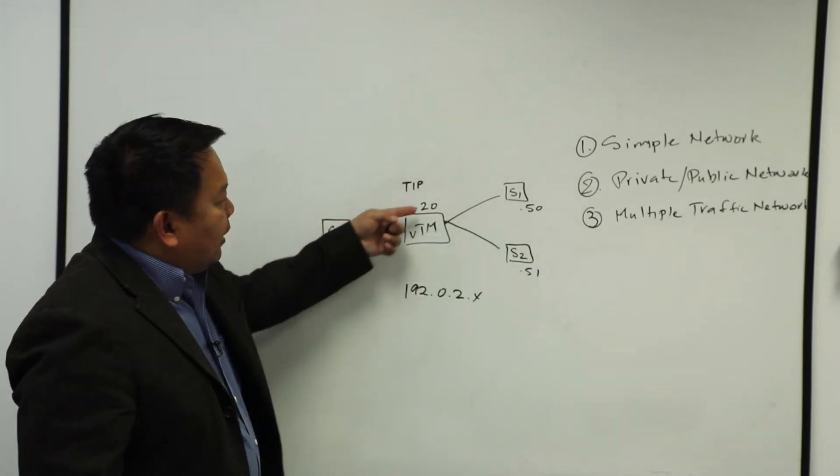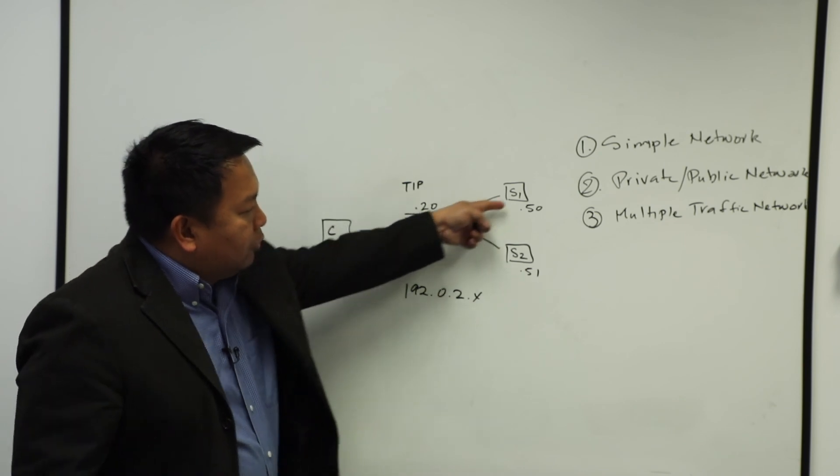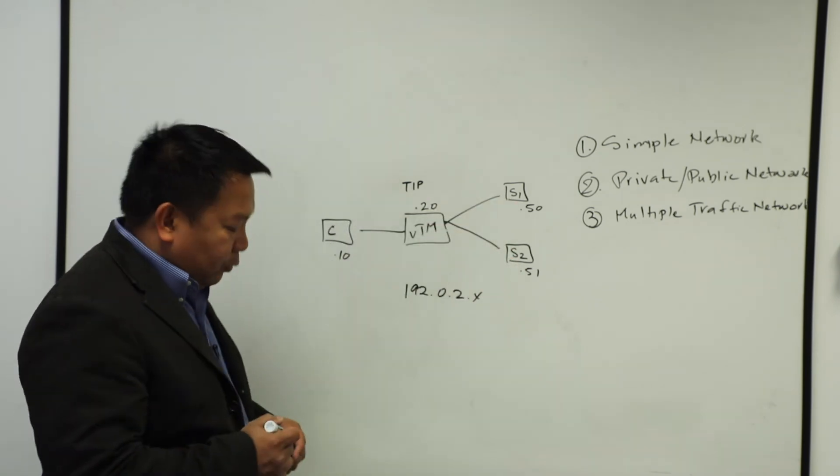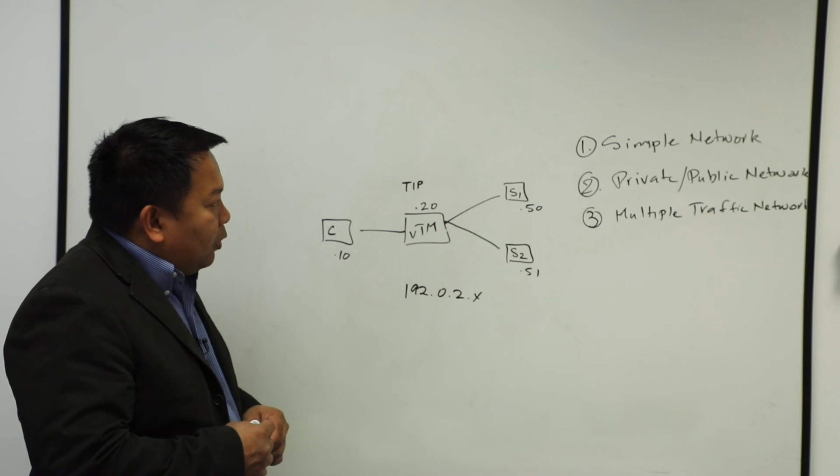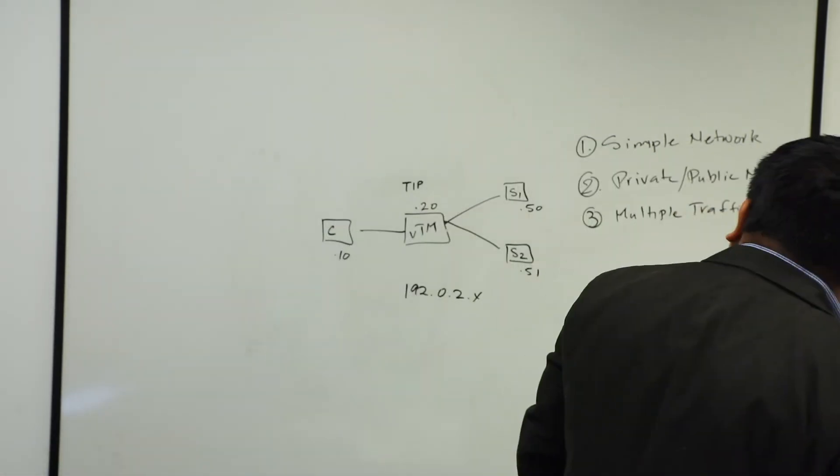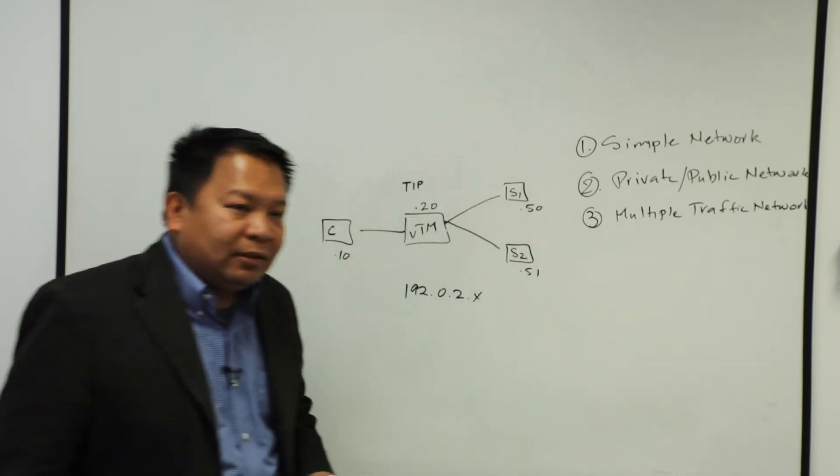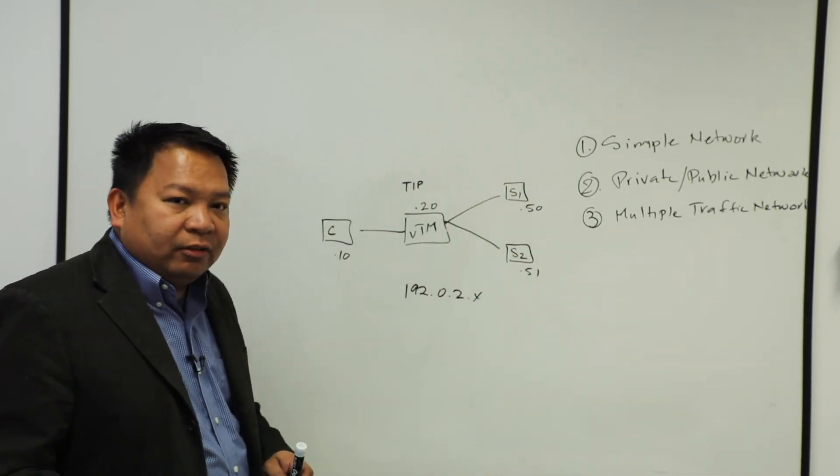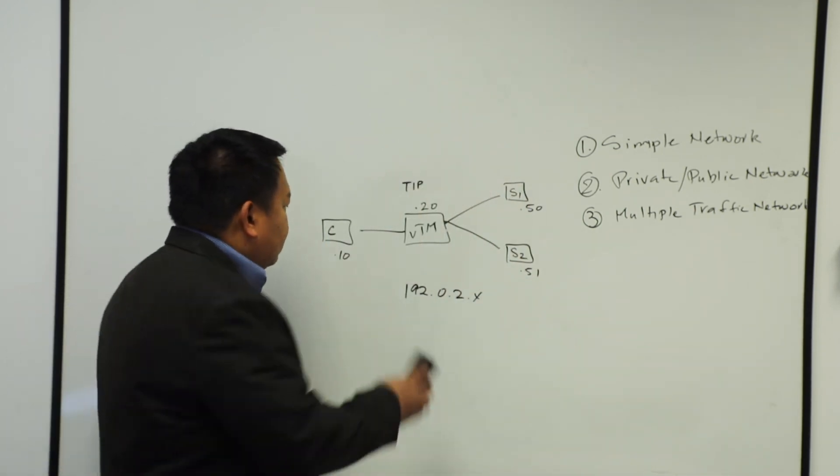So when the request comes in, it hits the VIP. The VIP goes to accordingly depending on what load balancing algorithm has been preselected. Okay? So that's a simple, very easy, very easy to configure. It's a layer 2.